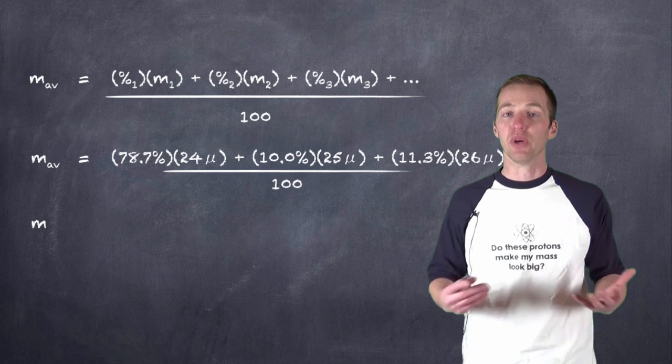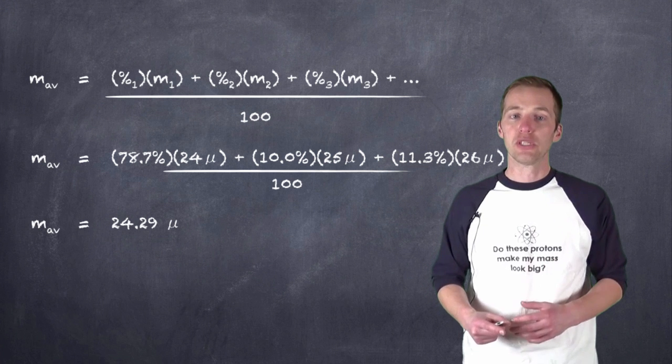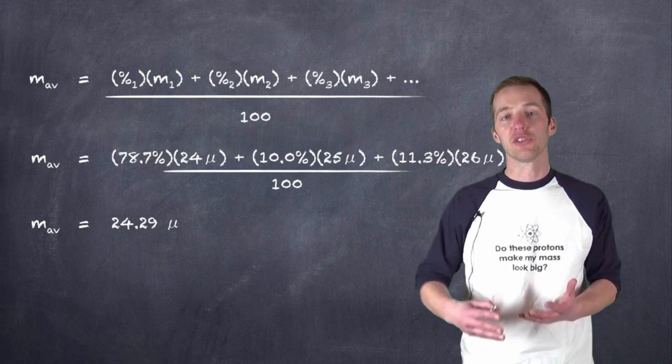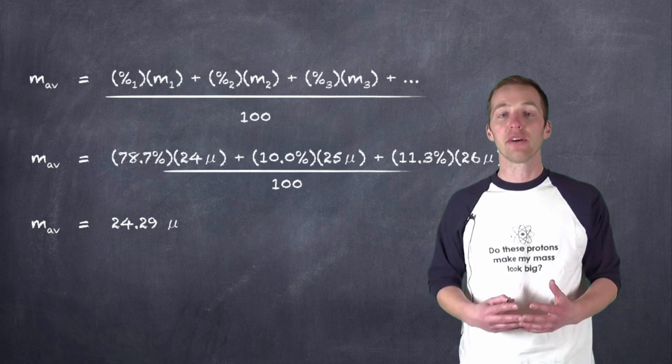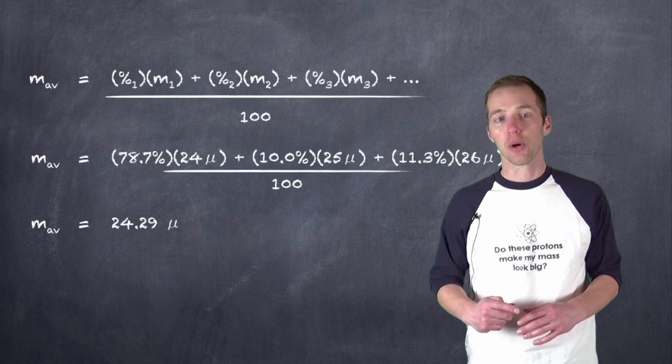We divide the whole thing out of 100, and ultimately we come up with our value. And the value in this case is 24.29. And we can see that it's more heavily weighted towards the 24 than it is towards any of the other values, because the magnesium-24 is the most common naturally occurring isotope.